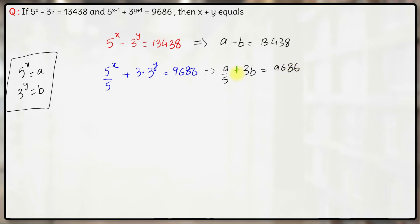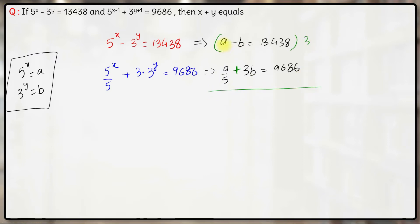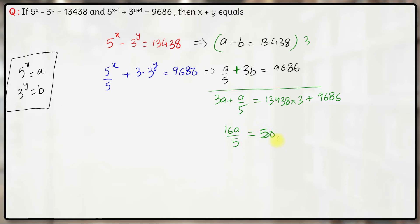Now let's multiply the first equation by 3 and add both equations. From here we will have 3a plus a by 5; the 3b terms cancel out, and we will have 13,438 into 3 plus 9,686 on the right-hand side. This comes out to be 15a plus a by 5, giving 16a by 5, which is equal to 50,000. So the right-hand side: 13,438 into 3 plus 9,686 is 50,000.